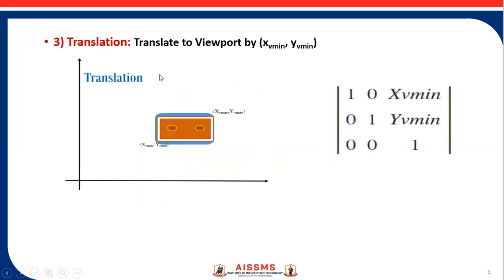After scaling, we again translate to the viewport by xvmin and yvmin. So the sequence is: translation, scaling, and again translate to the original viewport position. The translation matrix used here is [1, 0, 0 / 0, 1, 0 / xvmin, yvmin, 1], where xvmin and yvmin are the viewport coordinates.